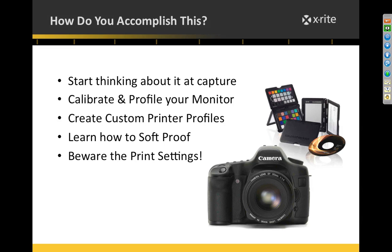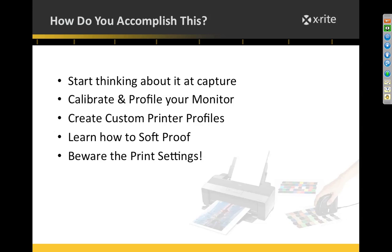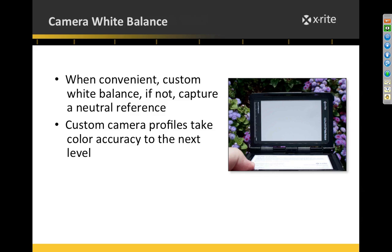So how do you accomplish this? We're going to start thinking about it right at Capture. We'll talk about monitor calibration and profiling, how to create a custom printer profile, and how to put them to use. We're going to go into Photoshop live and show you how to soft proof — which allows us to see what effect the profile has on the print before we ever go out to print. And we'll make sure the print settings don't interfere. The workflow goes: camera at Capture, monitor, printer profile, soft proofing, and then print settings.